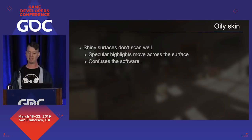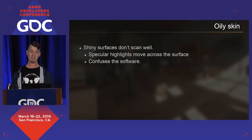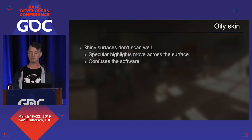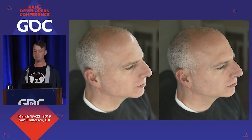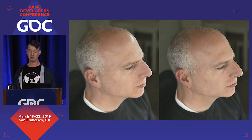Shiny surfaces do not scan well. Specular highlights confuse the software because a specular highlight moves across the surface depending on viewing angle — the software doesn't know the difference between a moving specular highlight and a fixed point, so it throws in a large collection of faulty matches. Skin is shiny, and particularly oily skin does not scan very well. A polarizing filter can help a lot with this. Taking the same shot with a polarizing filter over the lens removes the large highlight on the forehead, though it doesn't get all the highlights.